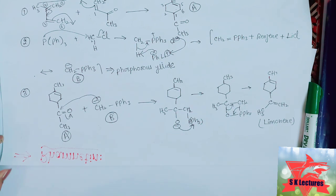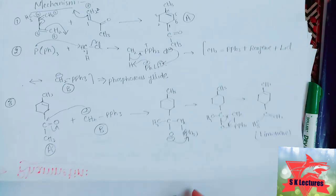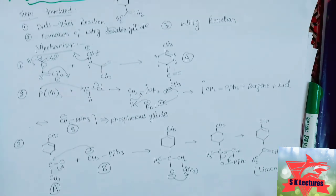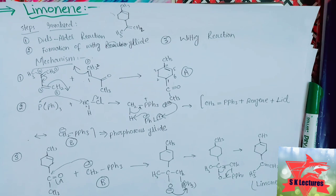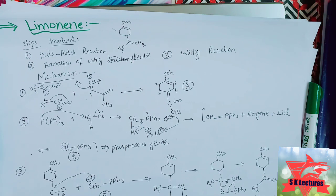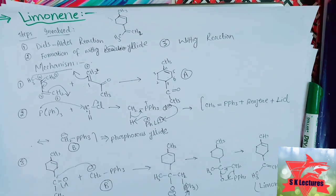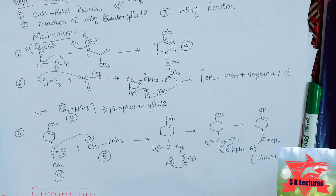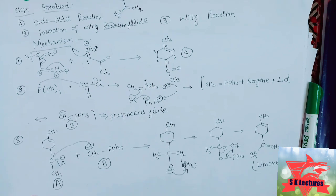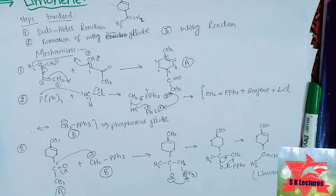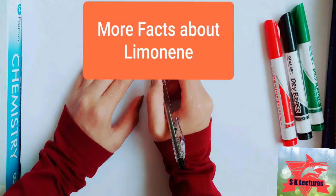Limonene is a chemical found in the peels of citrus fruits and in other plants. It is used to make medicines. For its uses, it can be used against cancer, obesity, short-term swelling — which we call inflammation of the airways in the lungs — and acute bronchitis, among other conditions.